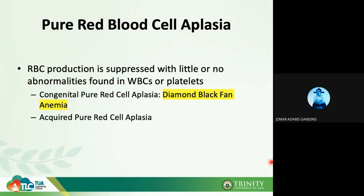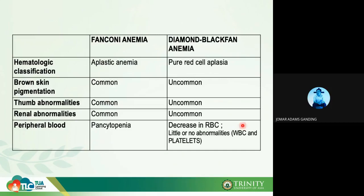The congenital form of pure red cell aplasia is also called Diamond-Blackfan anemia. To differentiate: Fanconi anemia is a form of aplastic anemia where all blood cells are decreased, whereas Diamond-Blackfan anemia is a pure red cell aplasia where only red blood cells are depleted. Brown skin pigmentation, thumb abnormalities, and renal abnormalities are seen in Fanconi anemia. In the peripheral blood, Fanconi shows pancytopenia while Diamond-Blackfan shows decreased RBC alone with little to no abnormalities in leukocytes and thrombocytes.